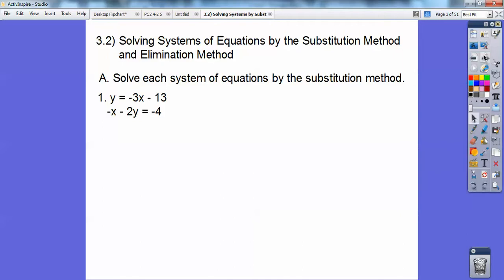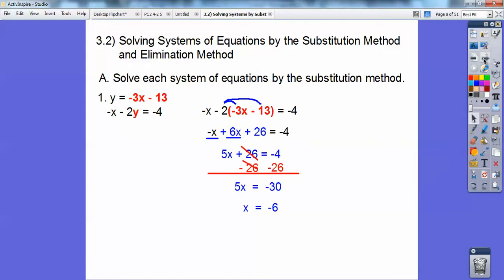Alright, so here y equals, I'm going to plug that y equals negative 3x minus 13 into the other equation right there. See that right there? It's going to go right there. So that's what I get over there. Distribute that negative 2 through and you get 5x plus 26 equals negative 4. Subtract 26 and you get negative 30. So x equals negative 6. Substitute x back into the top equation and you get y equals 5.